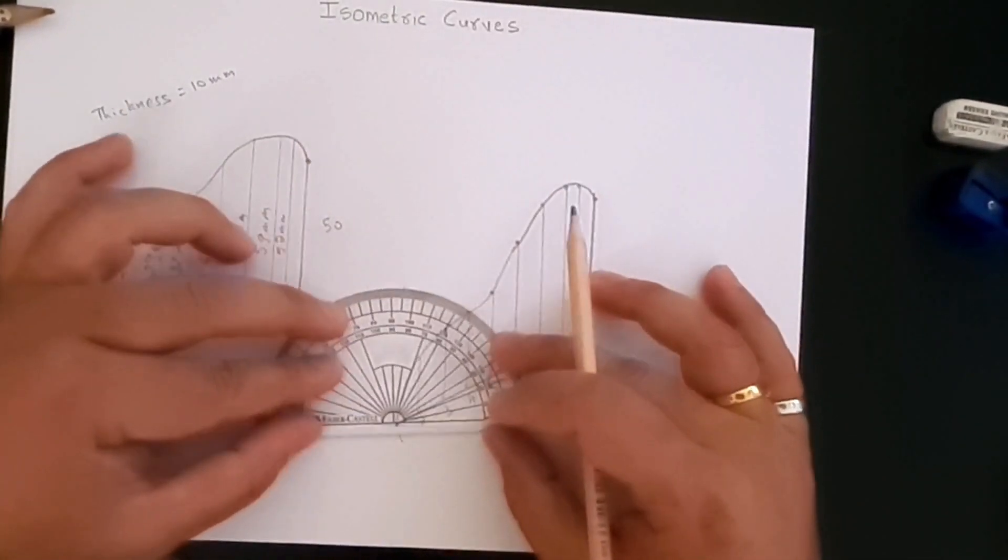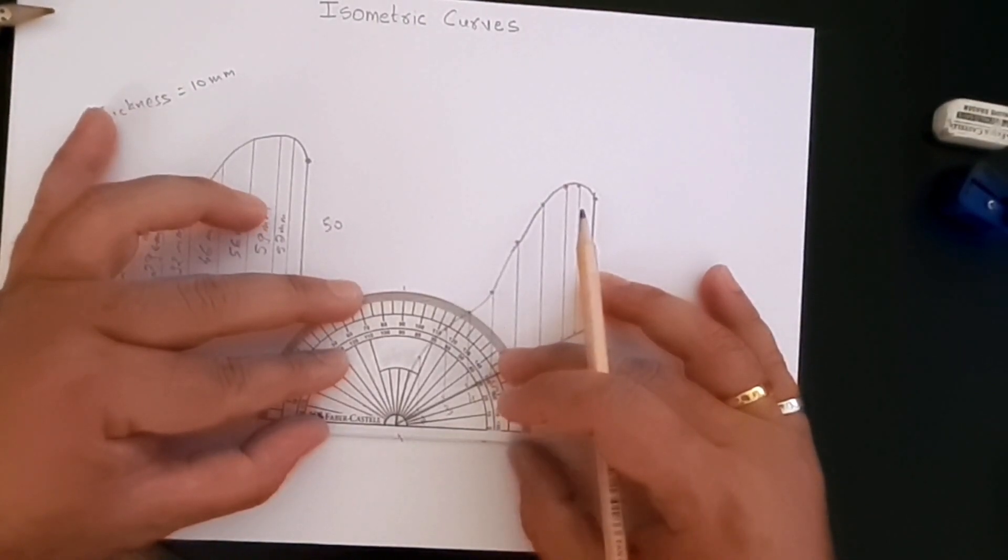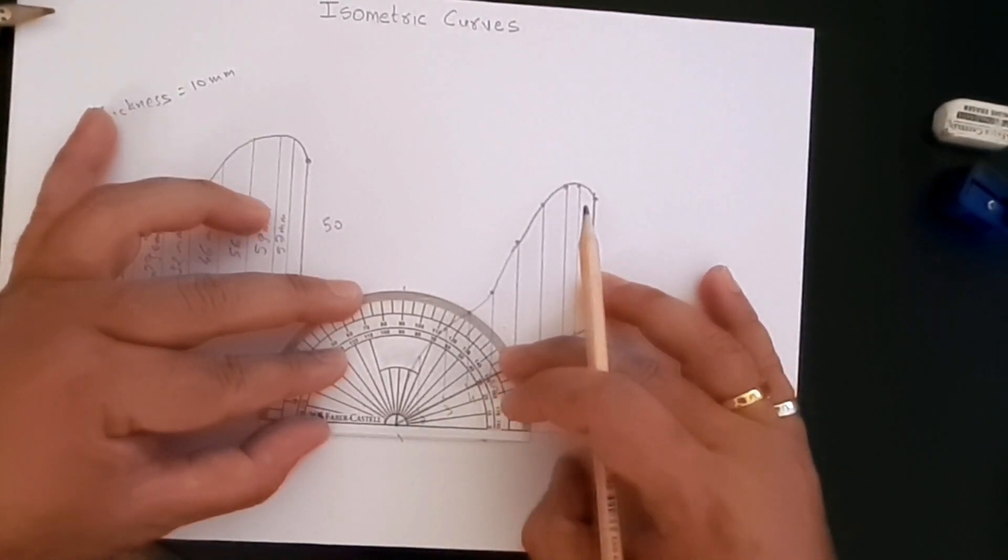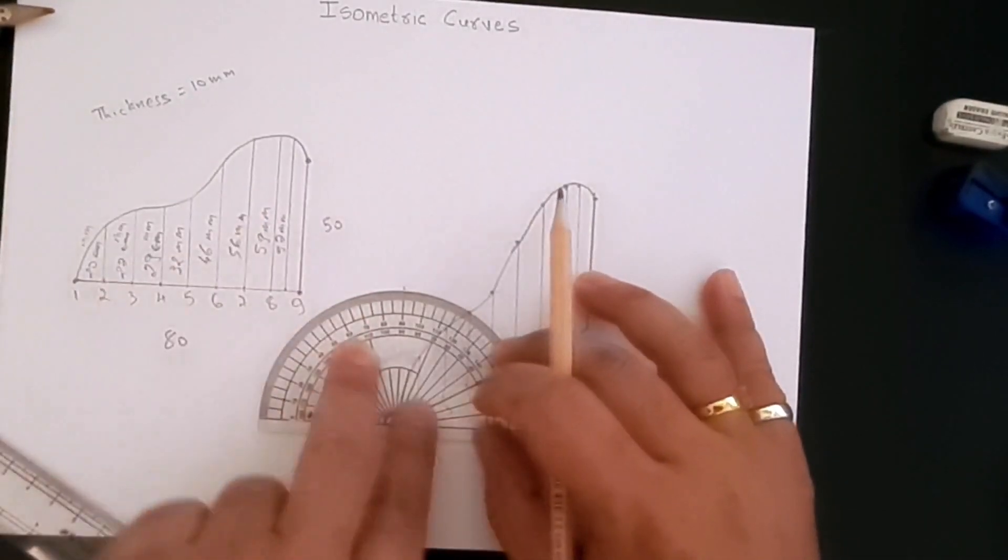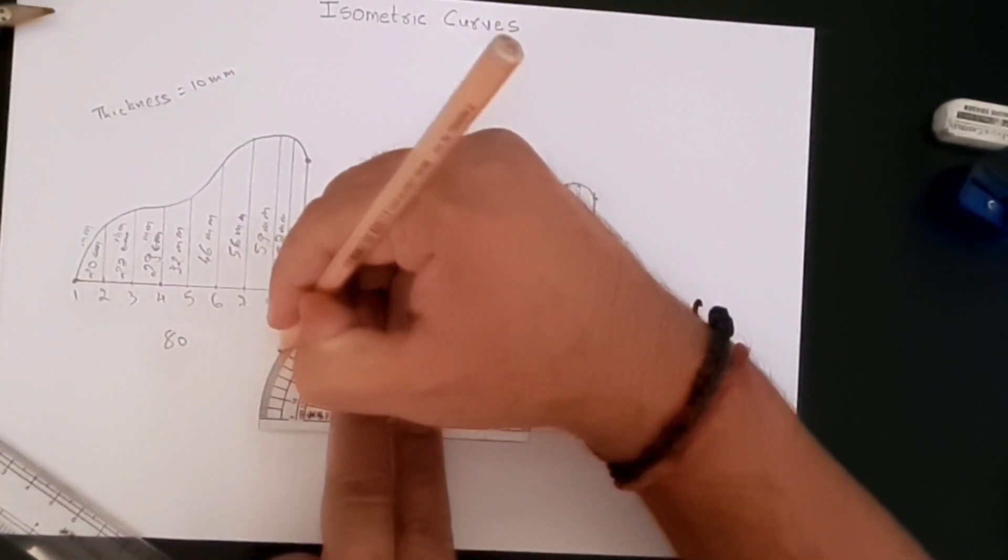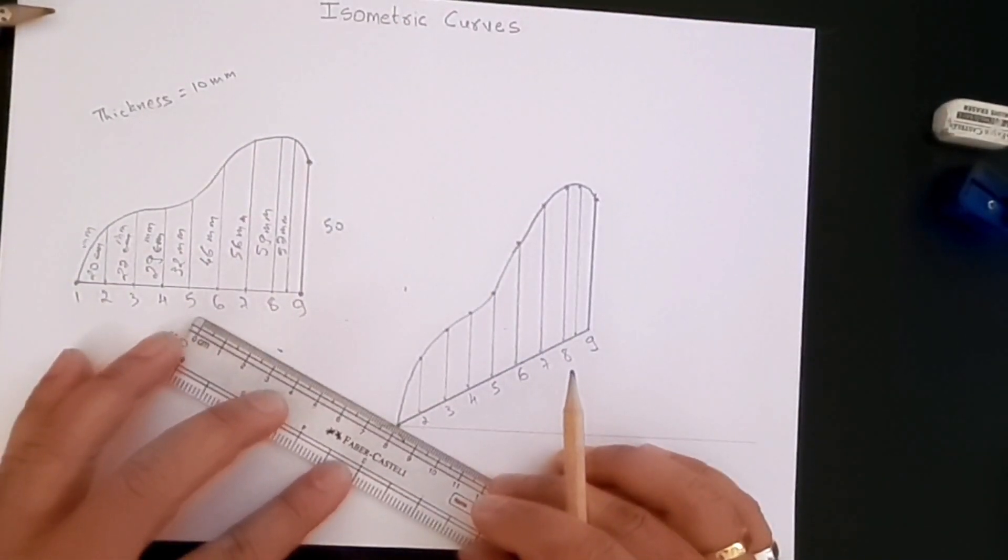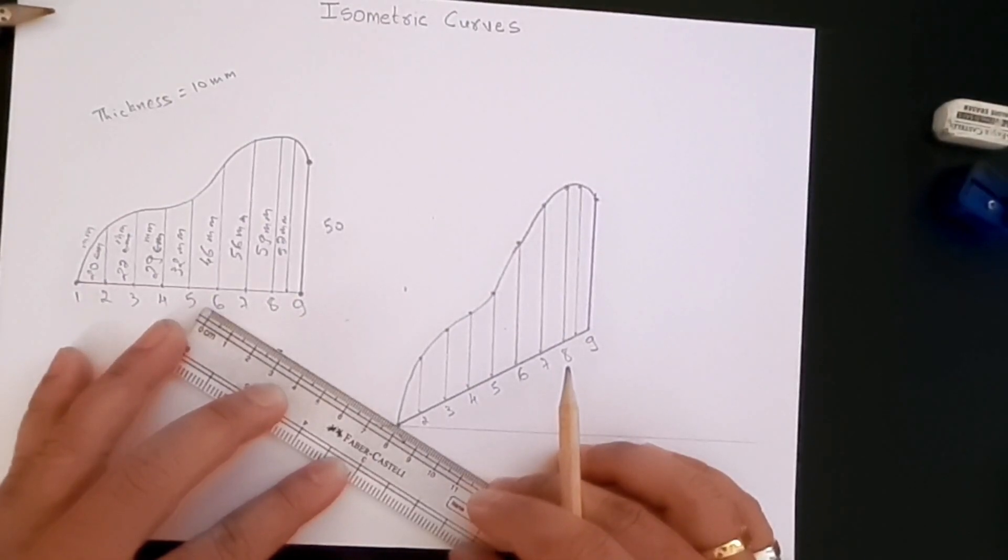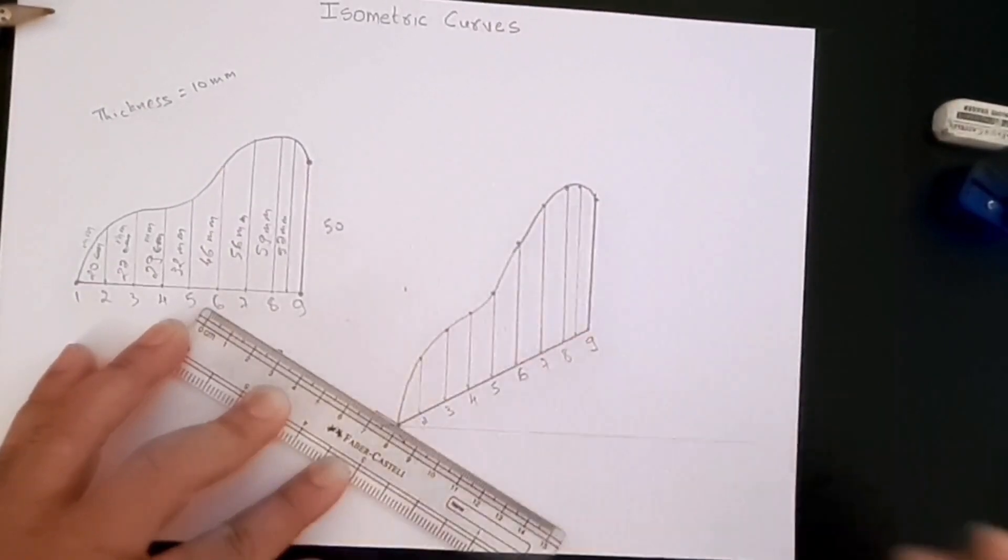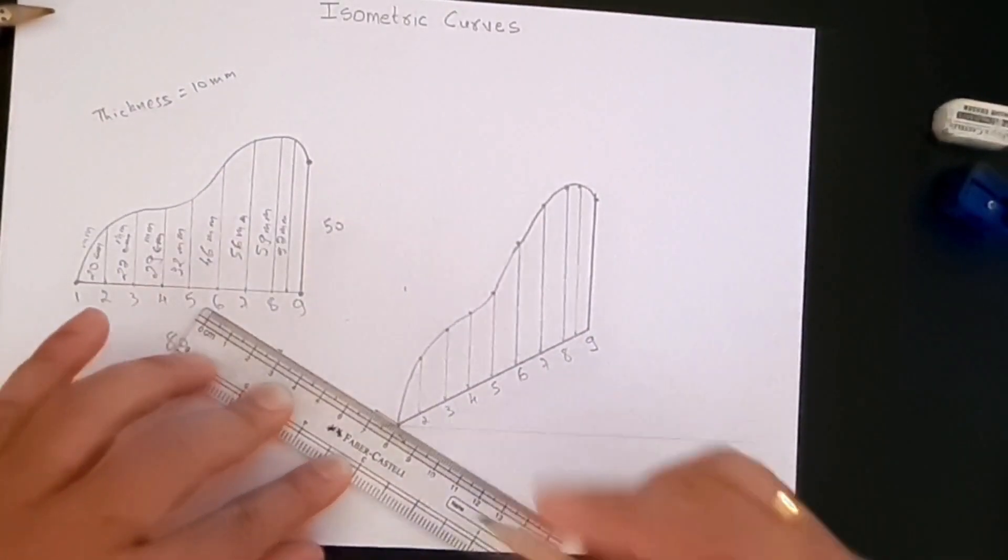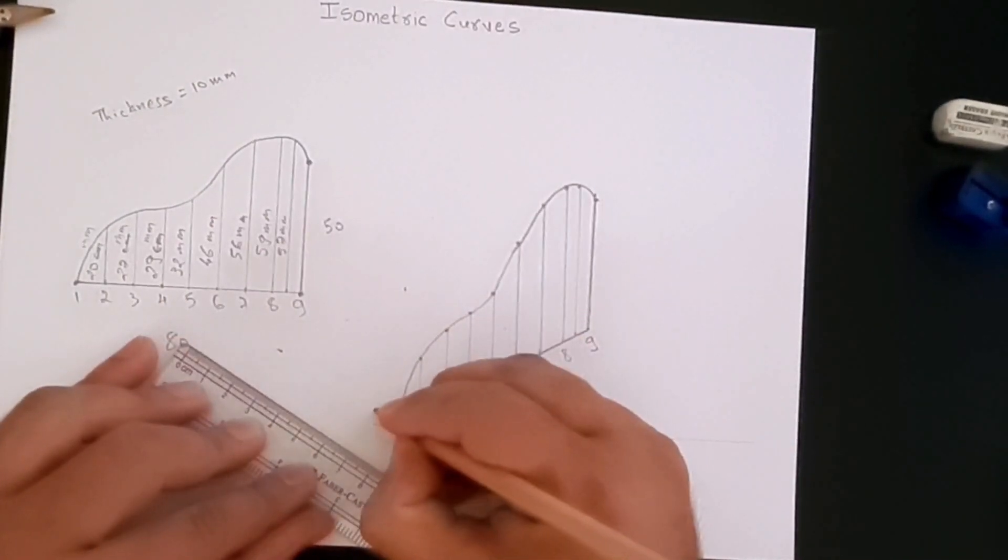To create that thickness, we do need to create the 30-degree line that I said at the beginning of this video that we don't need. Well, I'll take my word back. We will have to create that line for that thickness. So here I'll create this line.